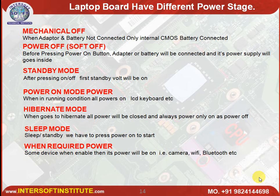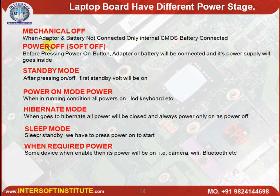A laptop board has different power stages. Mechanical off means when no adapter or battery is connected — only the internal CMOS battery is connected. That is called mechanical off. The CMOS battery gives power to the RTC. The second stage is power off, also called soft off — when we connect an adapter or battery but do not press the power-on switch. Before pressing the power-on button with adapter or battery connected, that is the power off stage.